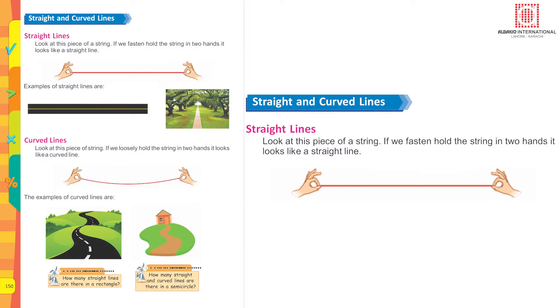Straight line: Look at the piece of string. If we fasten and hold the string in two hands, it looks like a straight line.